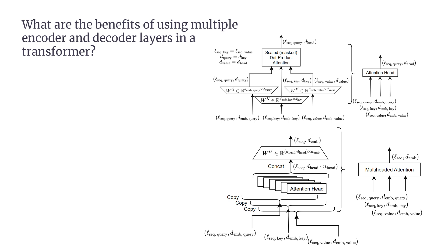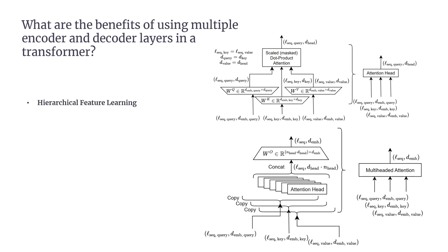Let's discuss why using multiple encoder and decoder layers in a transformer model is so effective. Adding more layers helps the model process information in increasingly sophisticated ways, making it better at handling complex tasks like translation, summarization, and text generation. First, hierarchical feature learning: each layer builds on the one before it, allowing the model to learn progressively more detailed representations. Lower layers focus on simple patterns such as word pairs or local dependencies, while higher layers capture deeper, more abstract connections like entire phrases or sentence-level meanings. This hierarchy is essential for moving from small details to big-picture context.